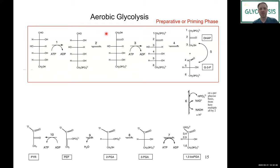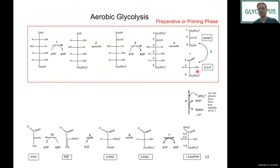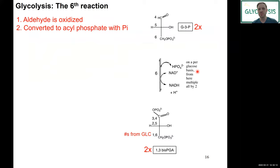This first part of glycolysis — steps one through five — we call the preparatory or priming phase. We haven't generated any ATP yet; in fact, we've used two molecules of ATP in the two kinase reactions. But we have generated two molecules of G3P, which we'll use in the next phase to generate ATP.